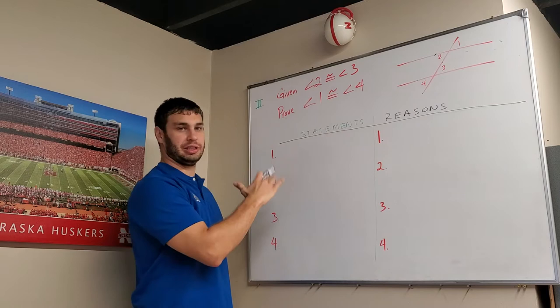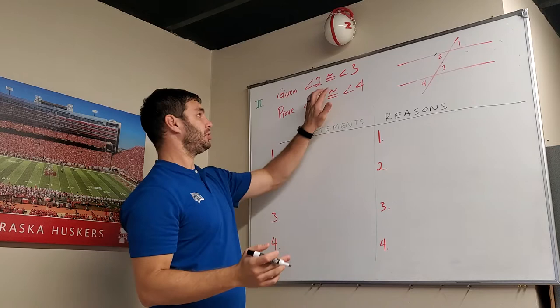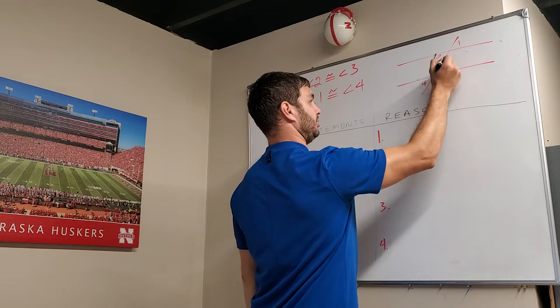And usually they come with a picture or a diagram. In this case, we have a diagram over here, and I want to mark up that diagram with what I know. I'm starting with angle 2 is congruent to angle 3, so 2 and 3 are going to be congruent.